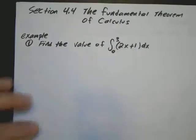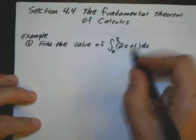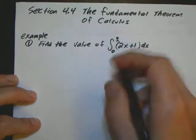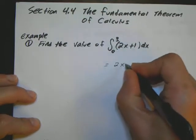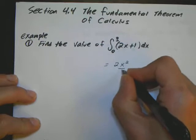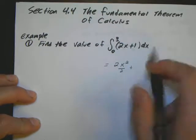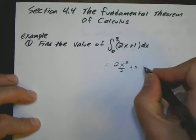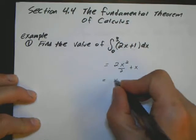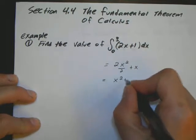So the antiderivative here is I'm just going to use the power rule for the 2x squared. So the antiderivative is going to be 2 times x squared over 2 plus the antiderivative of 1 is going to be x. Then I simplify this, this gives me x squared plus x.